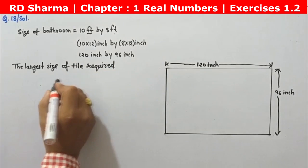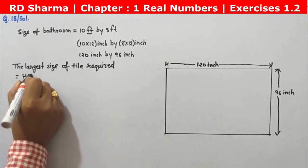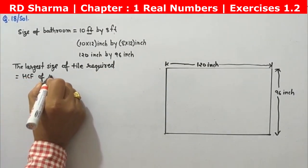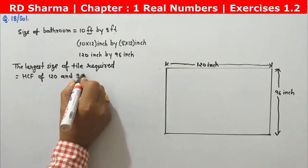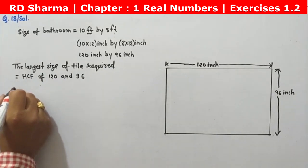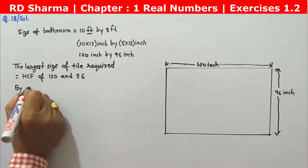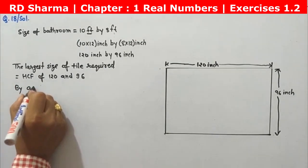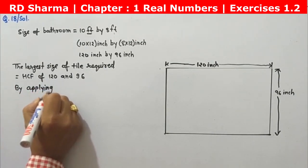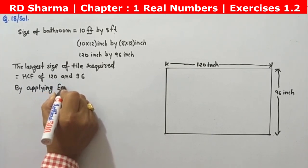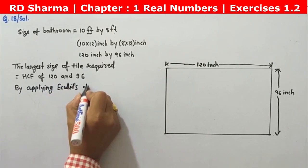The required tile size is equal to the HCF of 120 and 96. We will find this by applying the Euclidean Division Lemma.